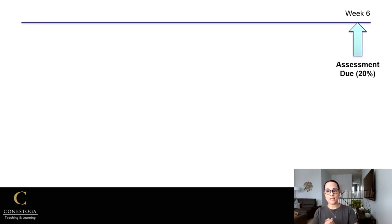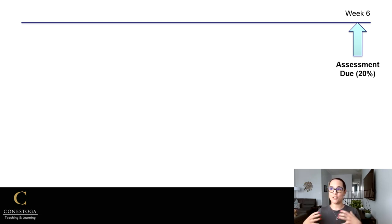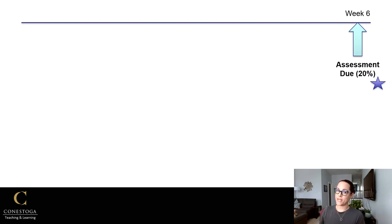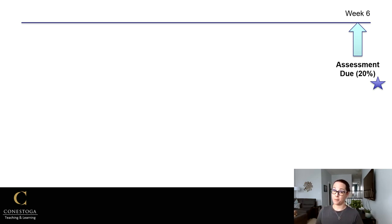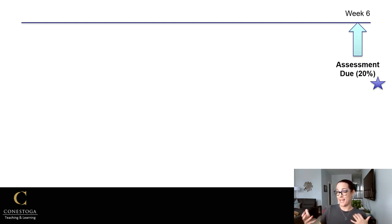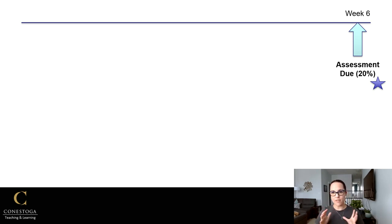Let's think about an assignment due in week six and how we support students to understand and do their best with it. One important thing to consider is how much that assignment is weighted toward their overall grade. Students often don't fully understand what 20% actually means, so spend time talking about the real numbers — for example, if you don't do this assignment you cannot get above 80% even if you get perfect on everything else.